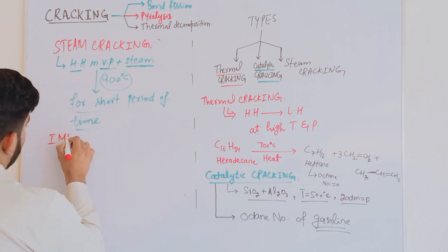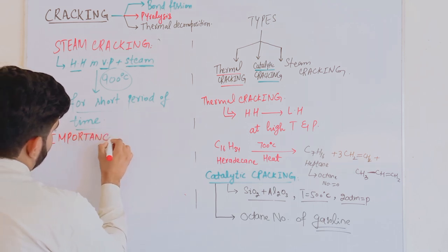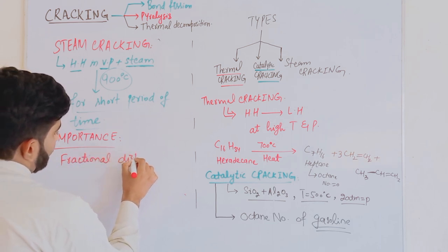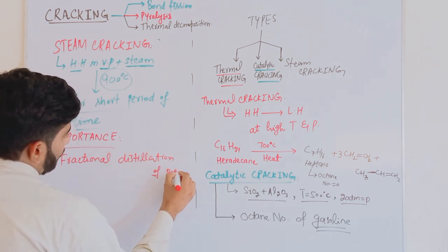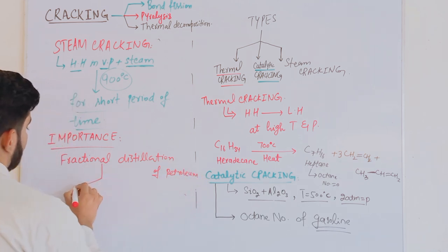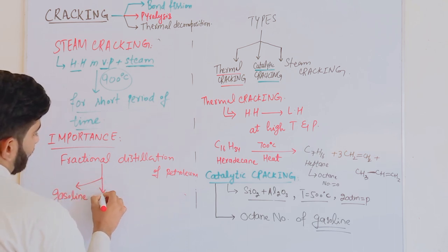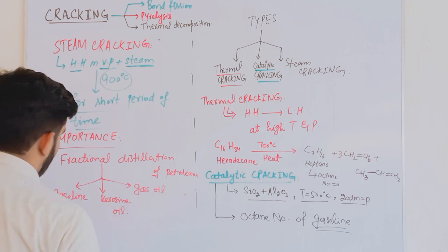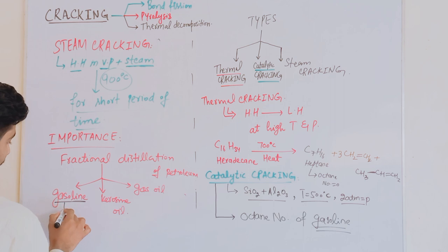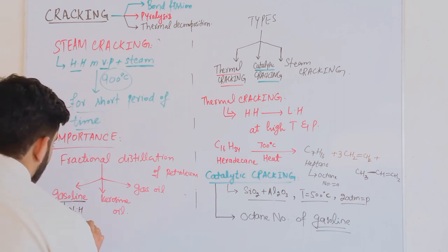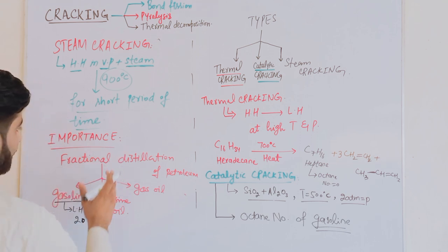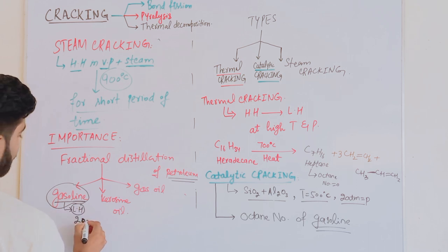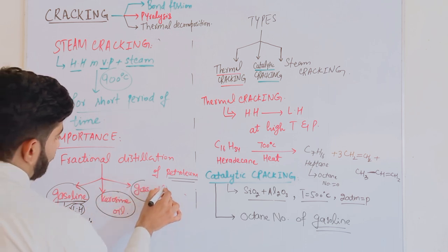Now we discuss the importance of cracking. When we perform fractional distillation of petroleum, we get gasoline, kerosene, and gas oil. Gasoline is a lower hydrocarbon and is produced at only about 20% by fractional distillation of petroleum.